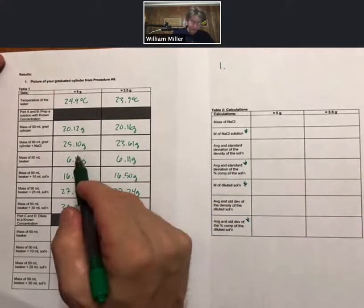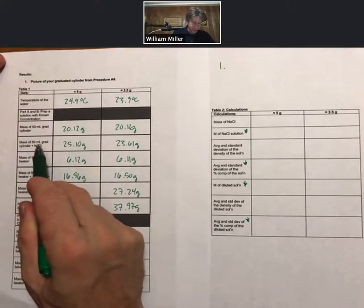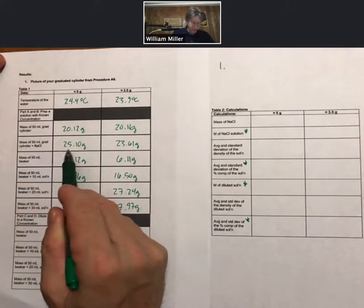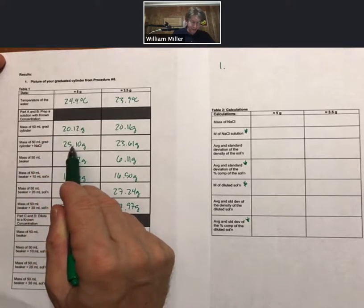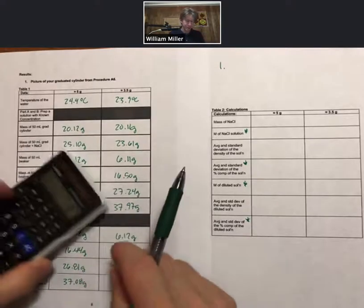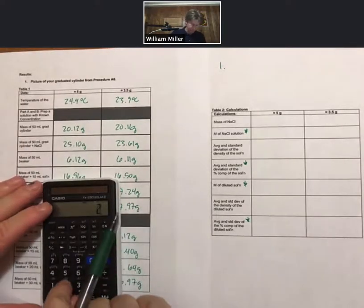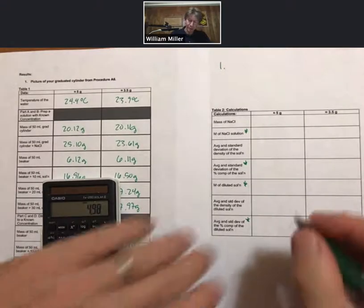That's going to be the mass of the 50 milliliter grad cylinder plus sodium chloride minus just the grad cylinder. Here I've got 25.10 minus 20.12. I've got 4.98 grams of sodium chloride.